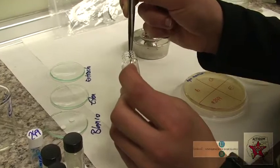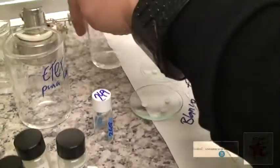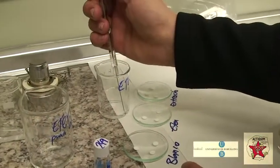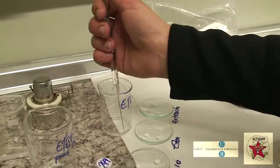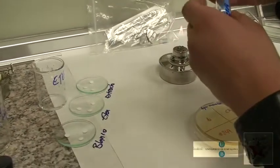Keeping in mind that we perform 3 replicates for each experiment, we prepare, on one hand, 3 blank discs with the organic extract dissolved in diethyl ether, and on the other 3 blank discs just with the solvent used before, in order to see that it does not interfere in the test activity results.